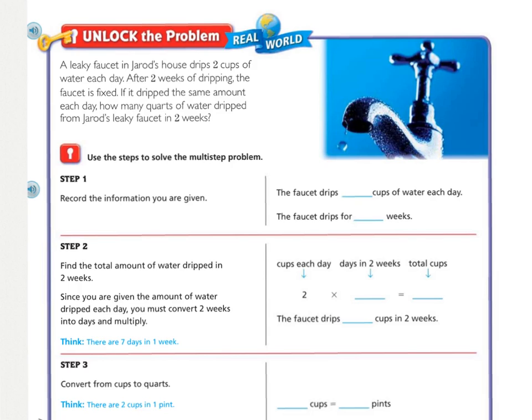We're going to be using different steps to solve the multi-step problem. First, you need to squiggle underline what you're being asked to find, circle the important math numbers and terms, and then do a straight underline on the clue words that can help you with which operations we are going to be doing. You should have squiggle underlined how many quarts of water dripped from Jared's leaky faucet in two weeks. You should have circled two cups and then two weeks.